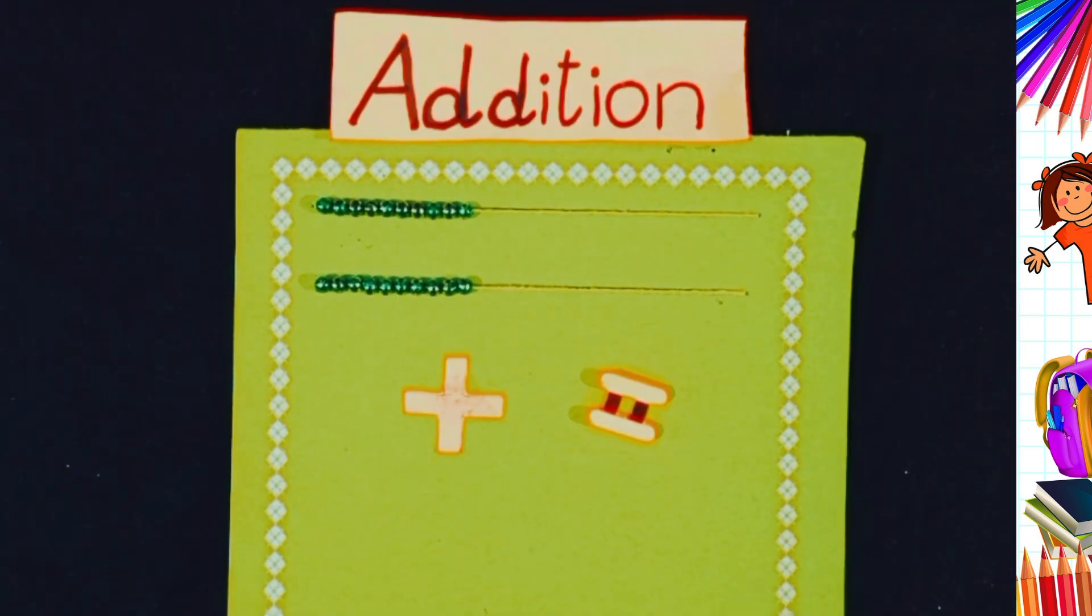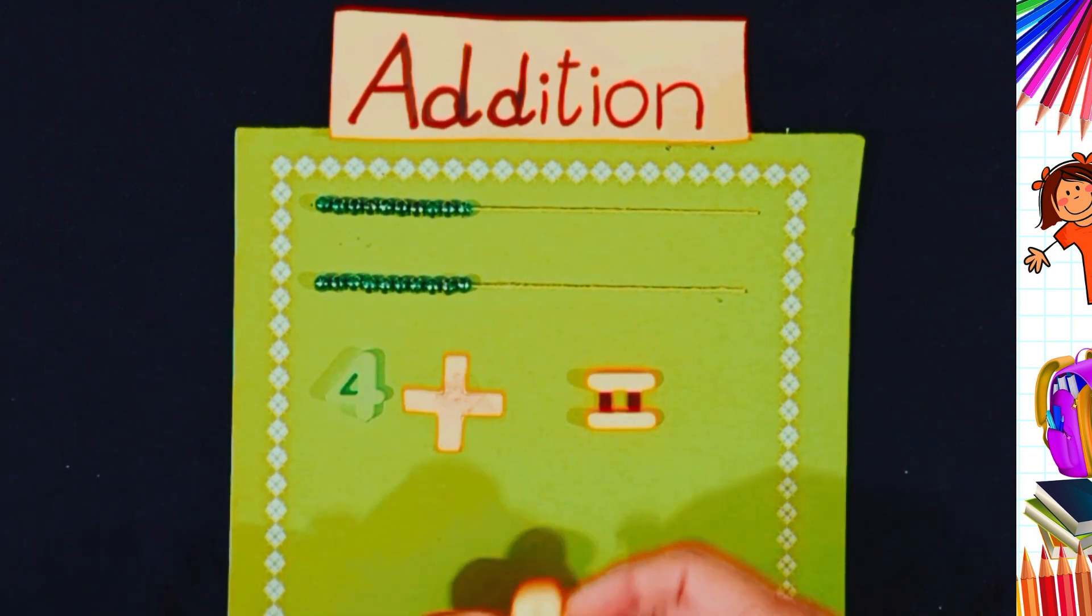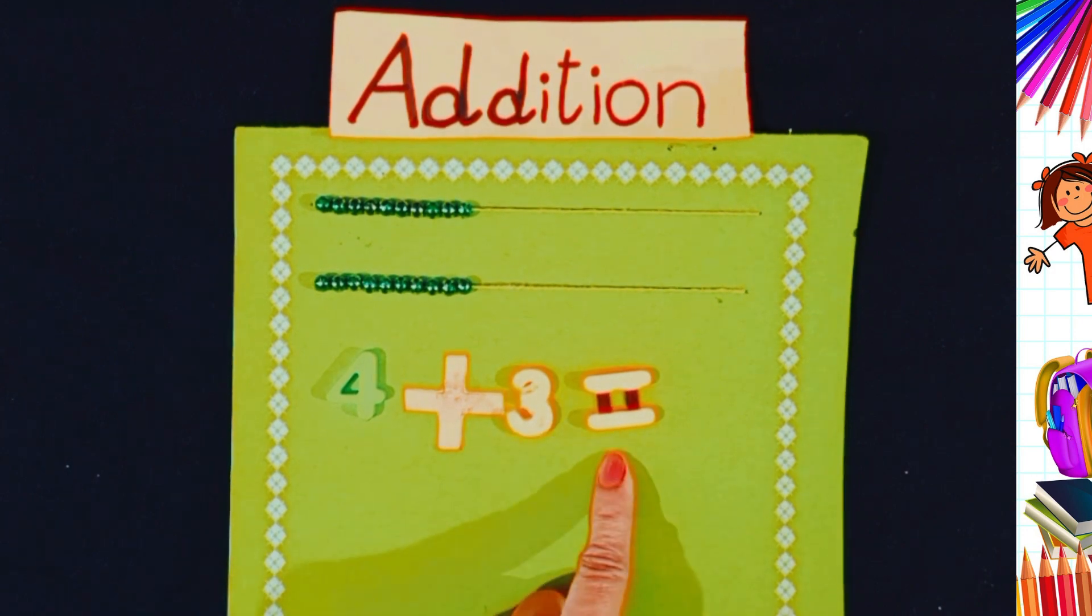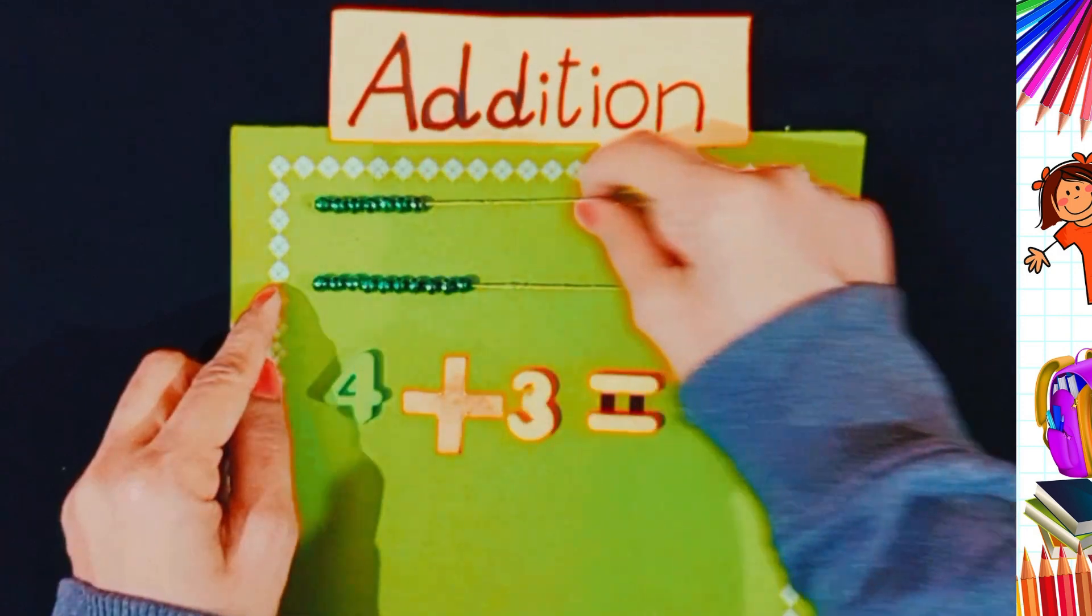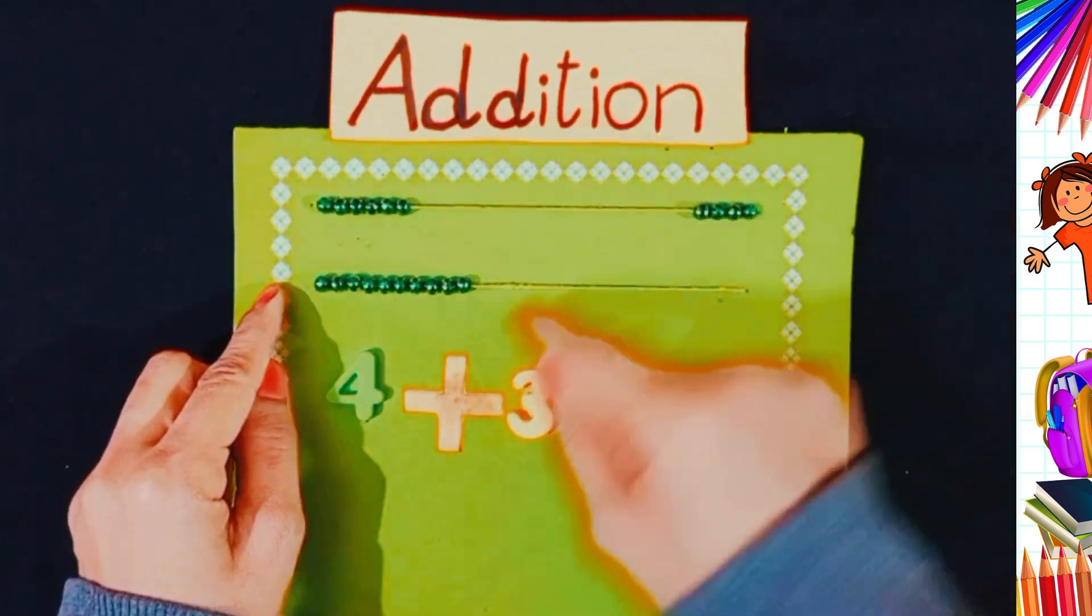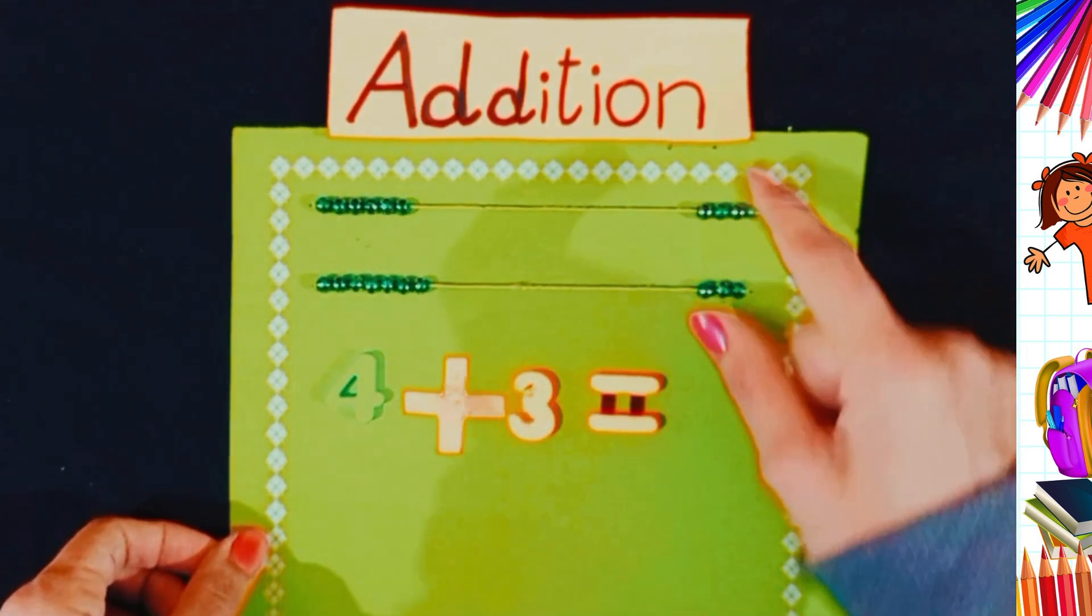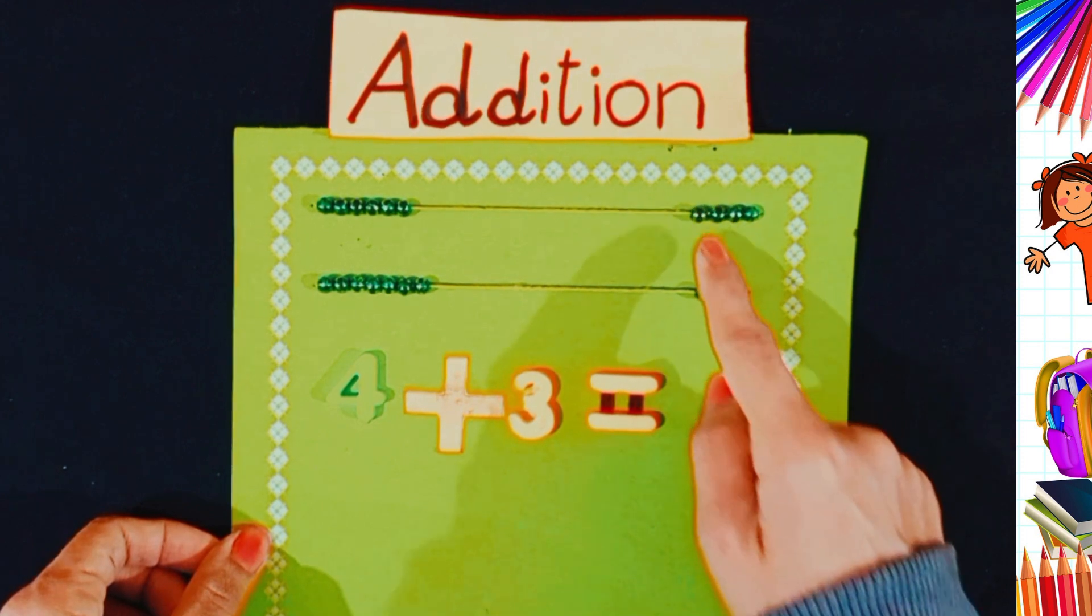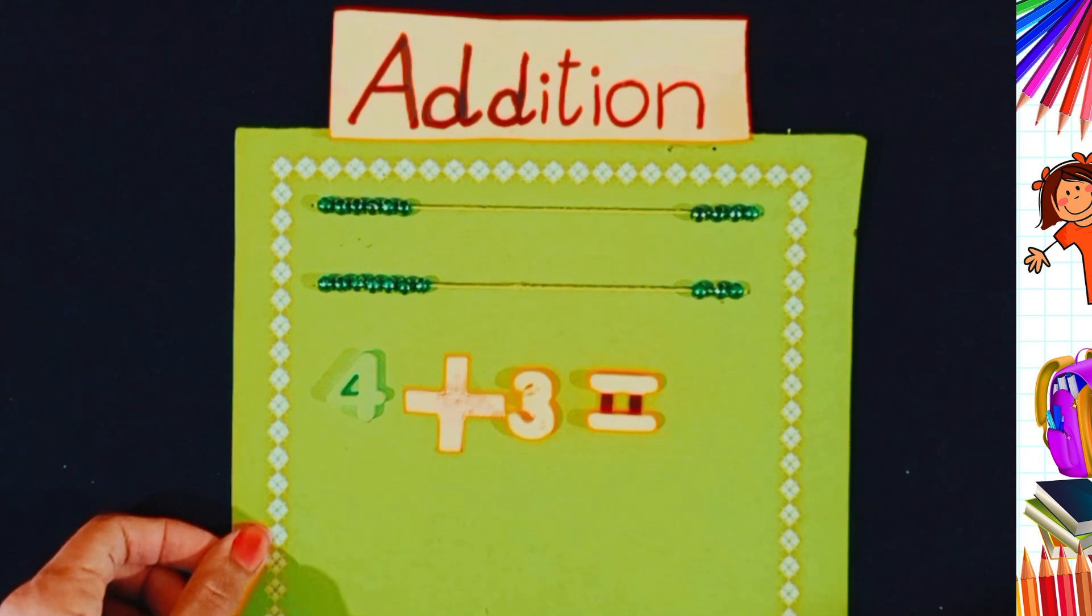Now, let's have some more random addition. 4 plus 3. 4 plus 3 equals to what? 1, 2, 3, 4. 3. 1, 2, 3. Let's count them. 1, 2, 3, 4, 5, 6, 7. 4 plus 3 equals to 7.